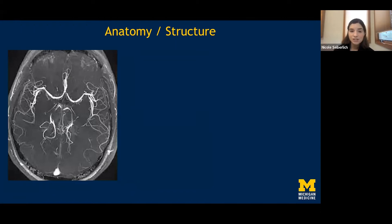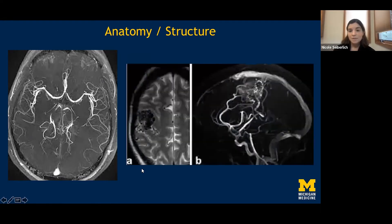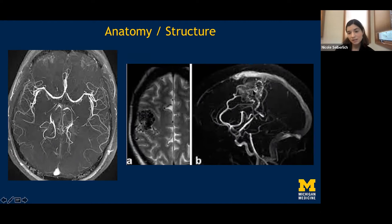We can also administer contrast agents to see blood vessels very clearly — making them very bright if we collect the signal correctly. We can look to make sure all vessels are intact and nothing's occluded. Here's an example of a patient with an arteriovenous malformation, a big tangle of blood vessels in the brain. Radiologists might identify the feeding blood vessel in order to block it off, starving the AVM so it can eventually be removed.